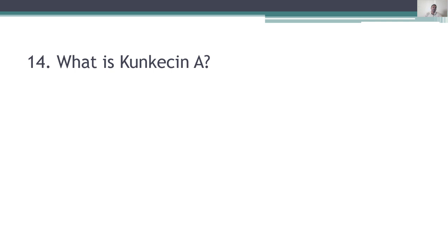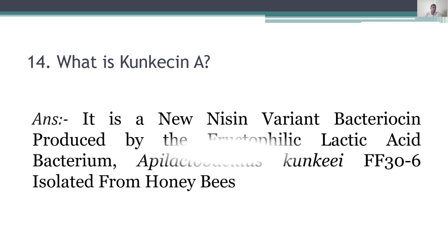Fourteenth question: what is cuncacin A? Cuncacin A is a new nisin variant bacteriocin produced by the fructophilic lactic acid bacterium Epilactobacillus cunciff306, isolated from honeybees.